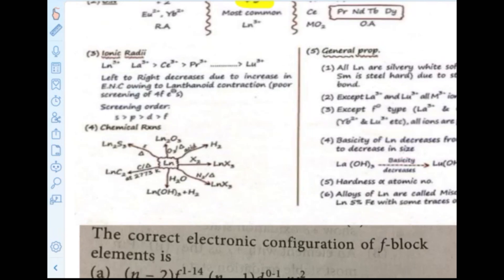The word 'contraction' means it is small, it contracts. The atomic radii go on decreasing as we move from left to right. As we move from left to right, the atomic radii decrease — this is what we call lanthanoid contraction. The reason for this is poor screening of 4F electrons. This is again a direct question: why does lanthanoid contraction occur? Because of poor screening of F electrons or effective nuclear charge.